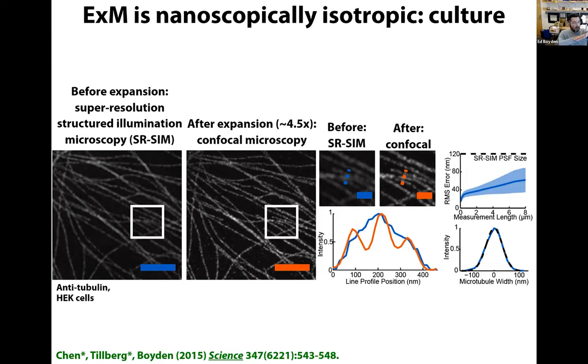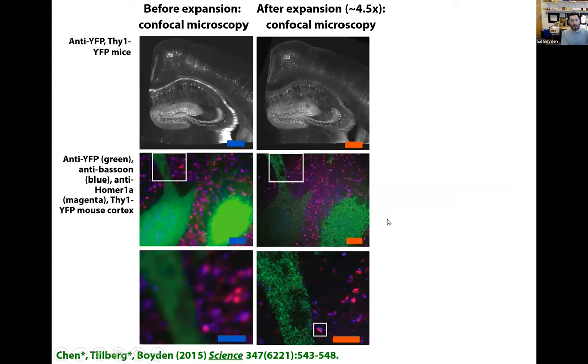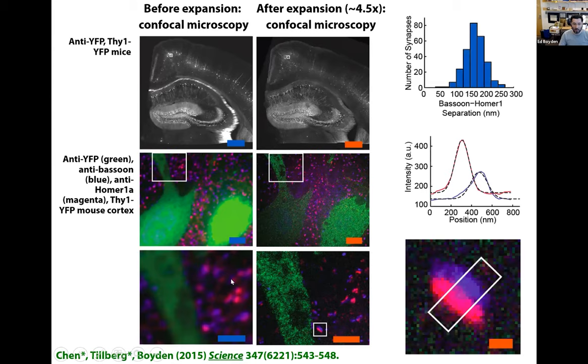We can also measure the resolution. When we expand by four and a half fold, a 300 nanometer resolution lens now has a resolution of 300 divided by four and a half, or about 65 nanometers. Here we have cells in culture with fluorescent antibodies decorating microtubules. We can deconvolve by the known ground truth, since microtubules have been studied for decades with electron microscopy, and we get a resolution around 65 nanometers, which is what we expected.